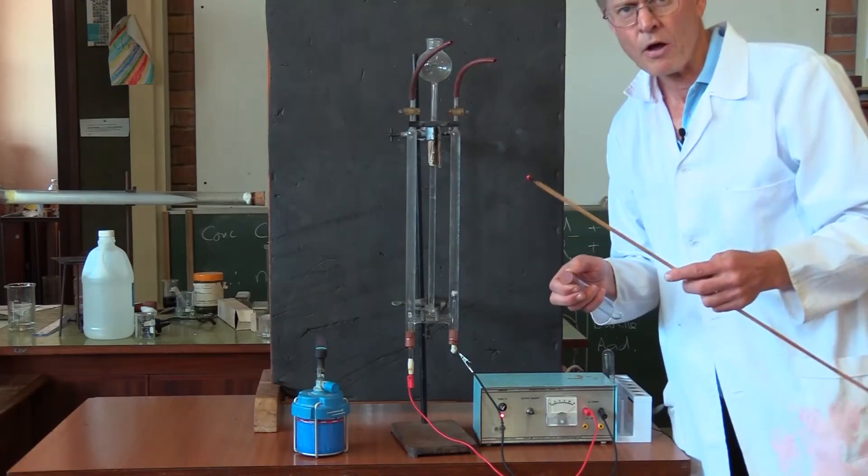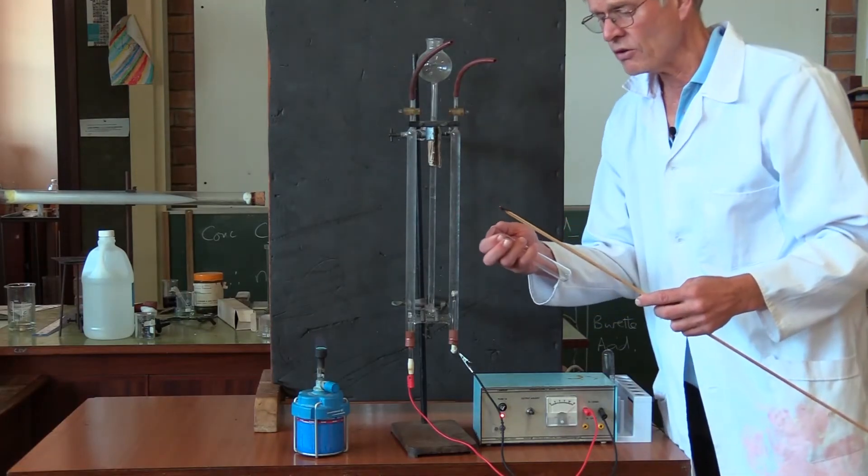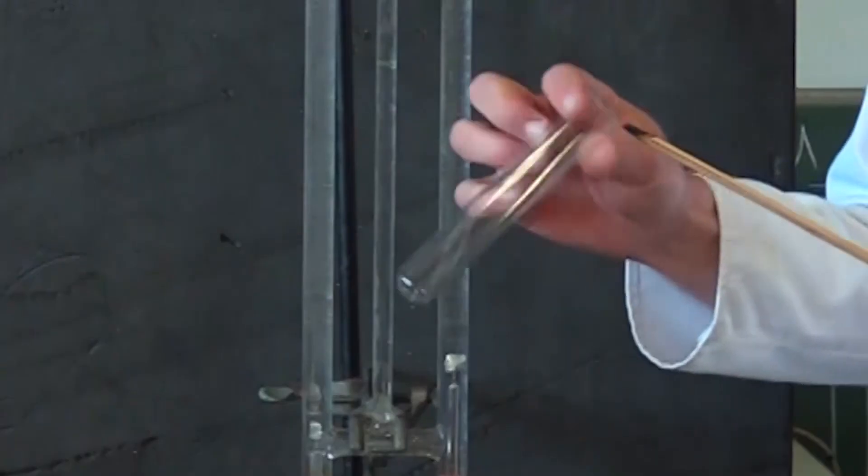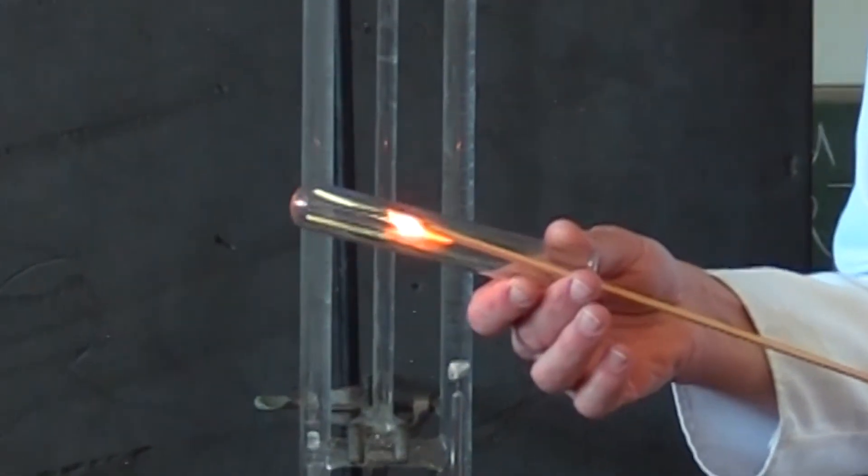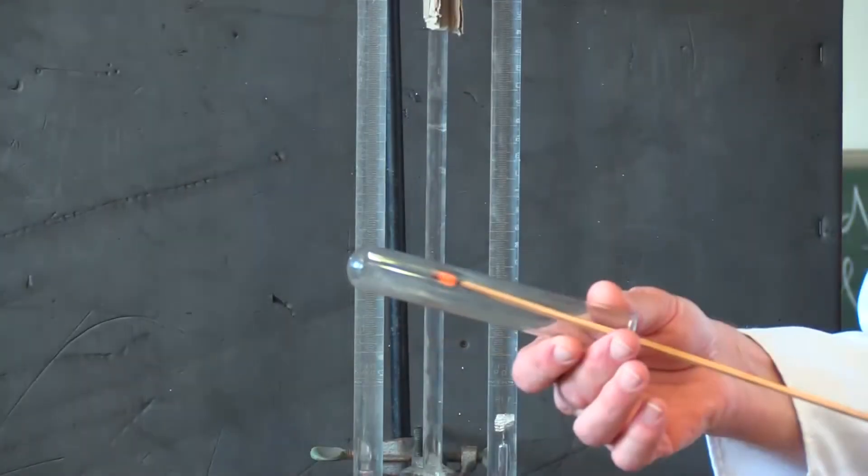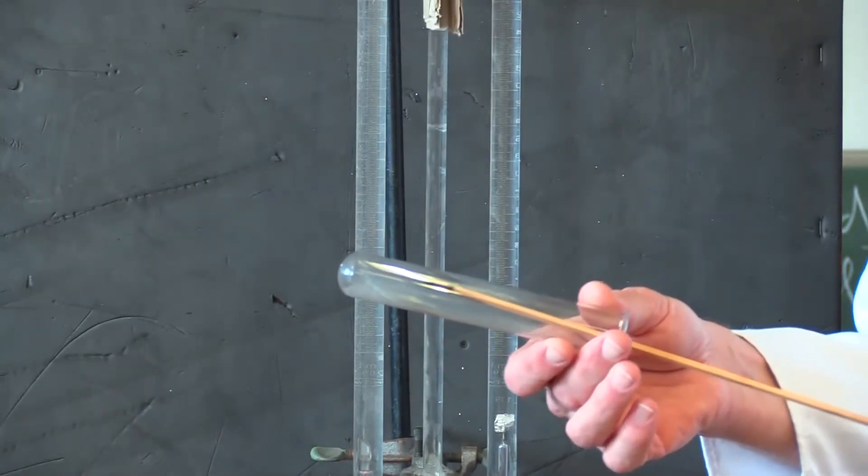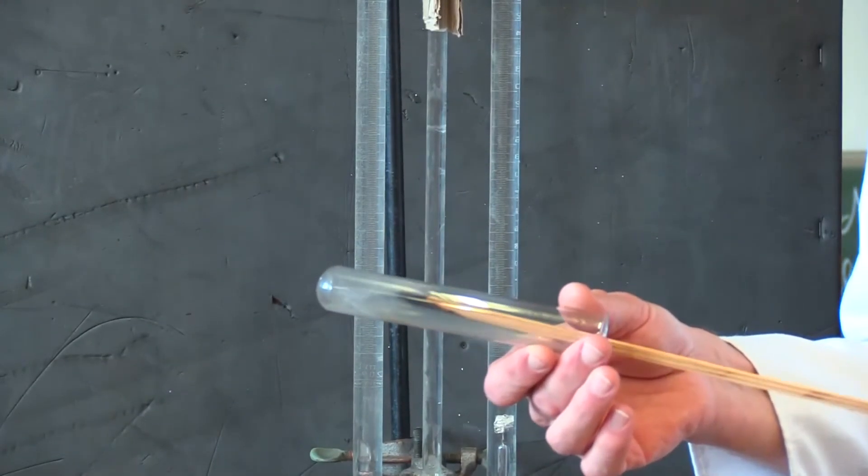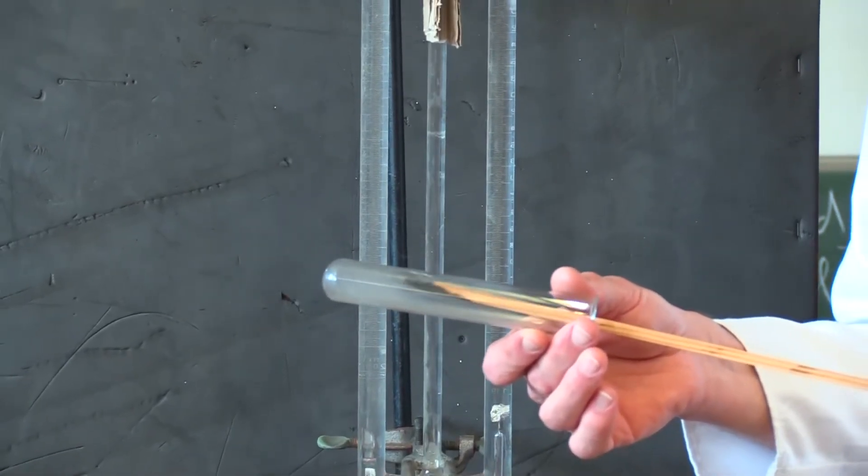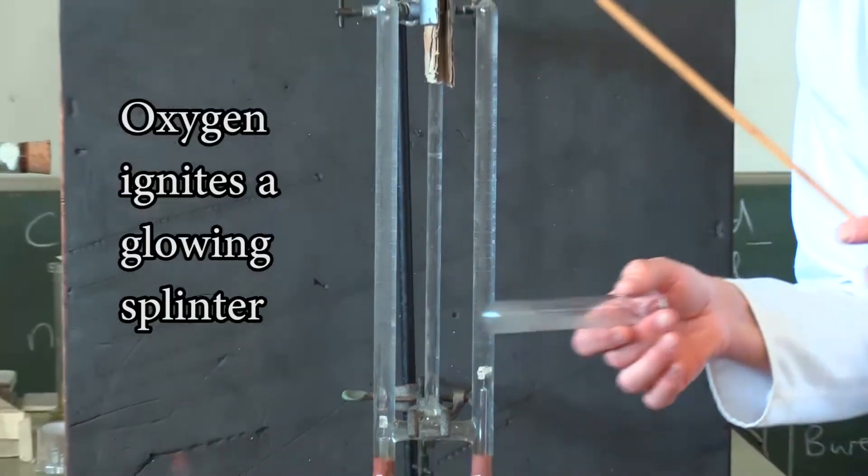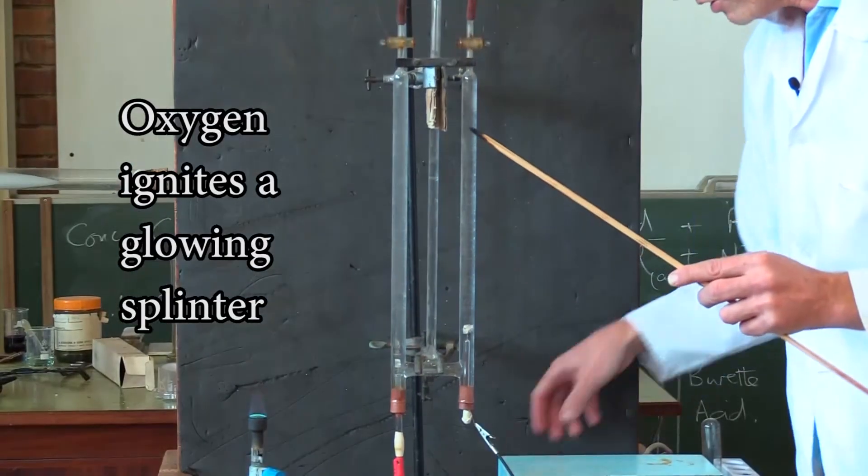Now I blow the splinter out, and I'm going to put it into the tube that's got the pure oxygen in. Can you see there? Oxygen supports combustion, and it made it not only glow brighter, but actually burst into flame. So, pure oxygen will make a glowing splinter ignite and burst into flame.